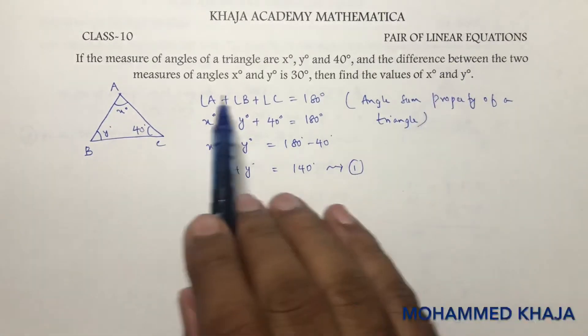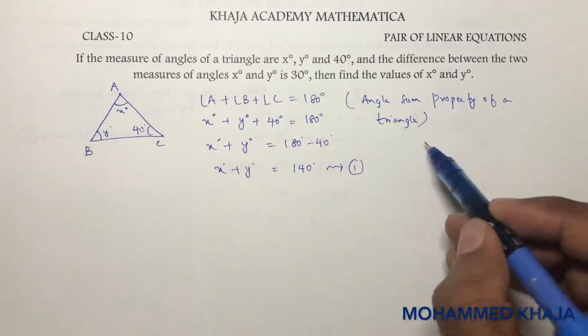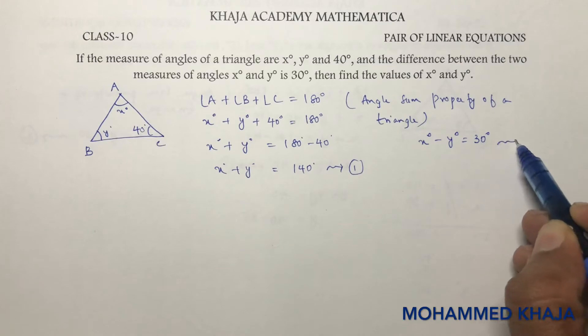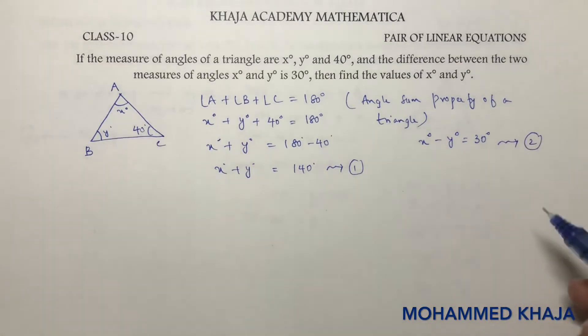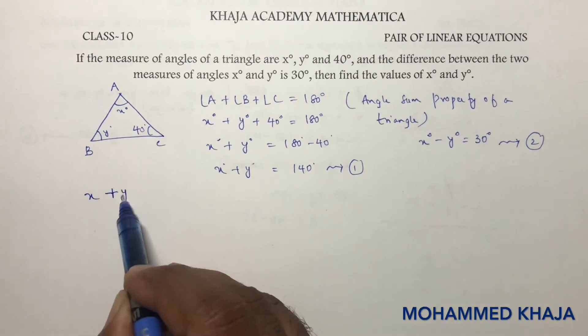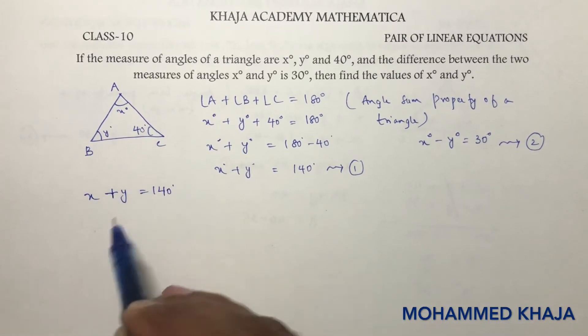Next, they told us the difference between the two measures of x and y. So x degrees minus y degrees is 30 degrees. This is equation two. Now I'll eliminate these two equations.